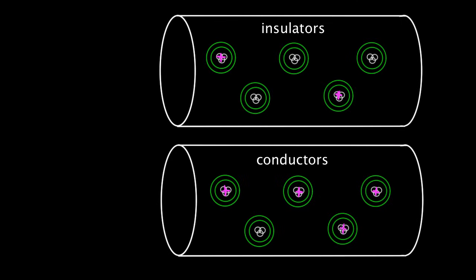The nucleus can wiggle around and jiggle just from thermal vibrations, maybe a little bit in place, but it can't travel freely throughout the material. For either an insulator or a conductor, as long as it's a solid — if it was a fluid, things can move and migrate around — but for a solid, the positively charged nucleus is fixed. They're stuck. The thing that might be able to move are the negatively charged electrons, and here's the difference.